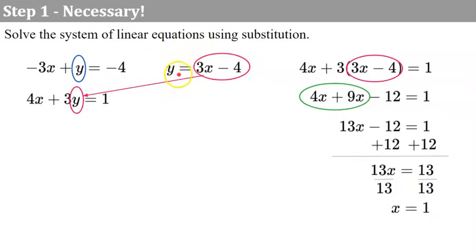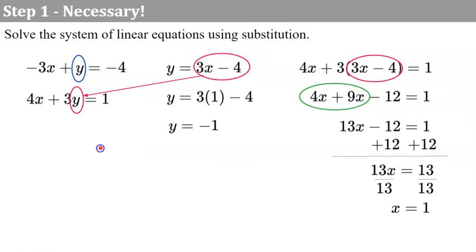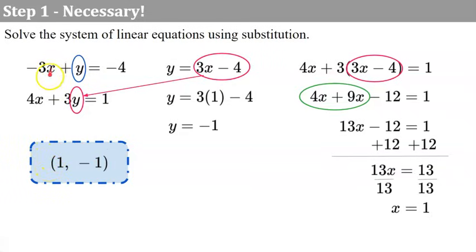Now we come back and use the equation already solved for y, replacing x with 1: 3 times 1 is 3, subtract 4 is negative 1. So our ordered pair is 1, negative 1. Let's check our work. When x is 1: negative 3 times 1 is negative 3, add negative 1 is negative 4. That checks the first equation. For the second equation: 4 times 1 is 4, 3 times negative 1 is negative 3, 4 plus negative 3 is positive 1. It checks.